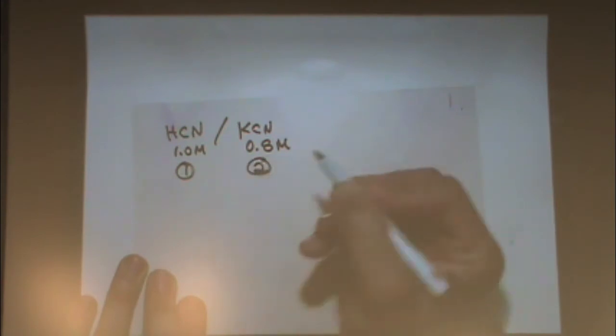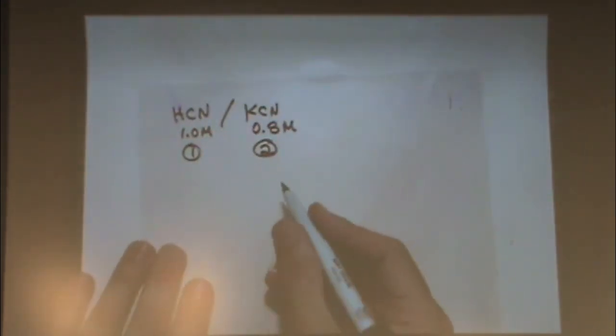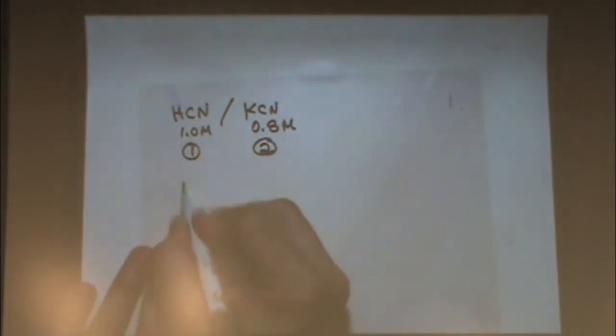So you'd say if I had this one first, and let's say I add this second to my solution. So I add this one first, and second I add that. This is a common ion effect. Let me show you why.